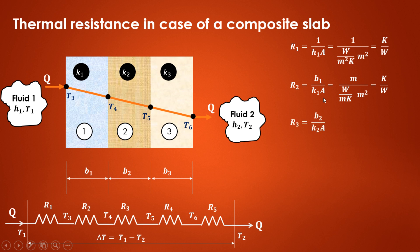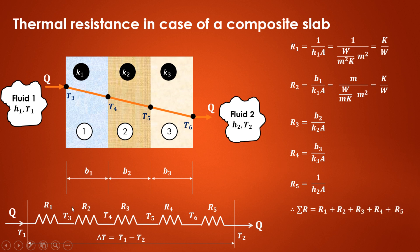R2 is the thermal resistance offered by the first slab: B1 upon K1·A. R3 is B2 upon K2·A, the resistance of the second slab. R4 is B3 upon K3·A, the resistance of the third slab. R5 is the convective resistance from the solid surface to fluid 2: 1 upon H2·A. R1 and R5 are convective resistances, while R2, R3, and R4 are conductive resistances — all in series.